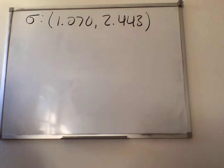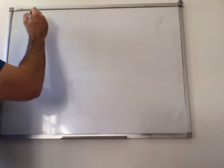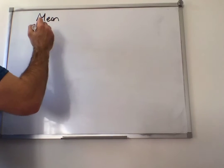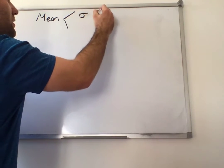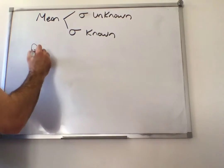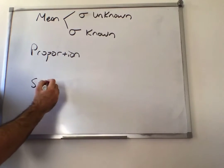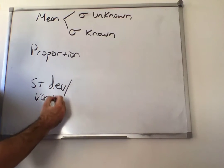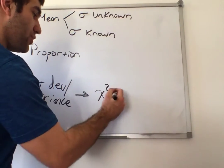So that's it for chapter 11. Chapters 8 and 11, all we were doing was constructing confidence intervals. So just to summarize, if you're constructing a confidence interval for the mean, either sigma is unknown or sigma is known. There was a proportion, and then there was the standard deviation slash the variance. If you're working with the standard deviation or variance, you're always going to use the chi-square distribution.